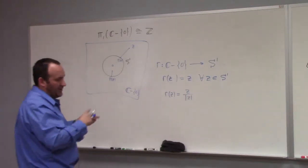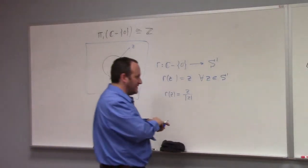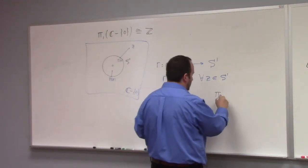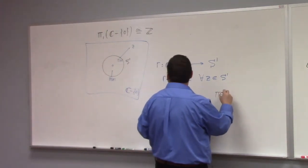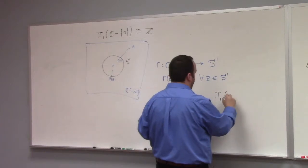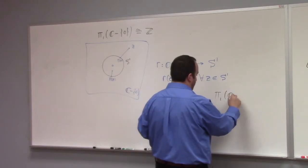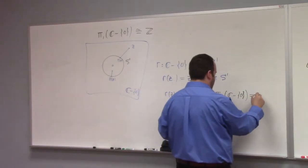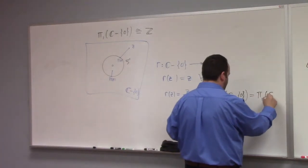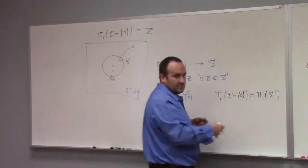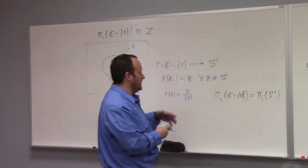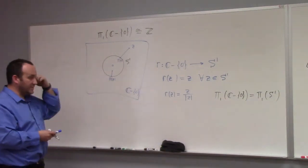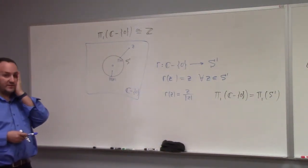After the dust settles, the fundamental group of the retracted space equals the fundamental group of the whole space. So the fact that we know the fundamental group of the circle is ℤ means that the fundamental group of the punctured plane is also ℤ.